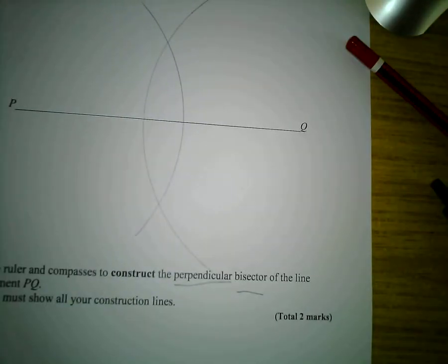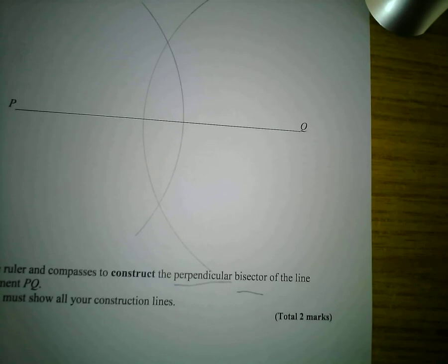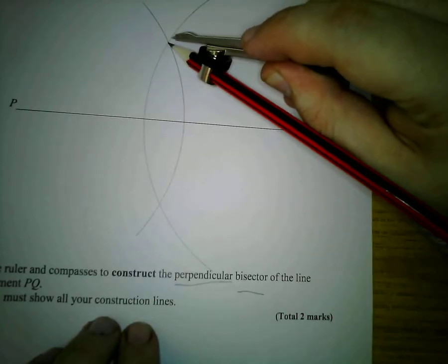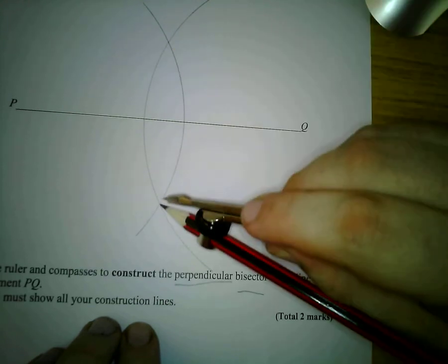When your compasses are open over halfway, what should happen is you should have two points where these two arcs intersect. Just here and here.